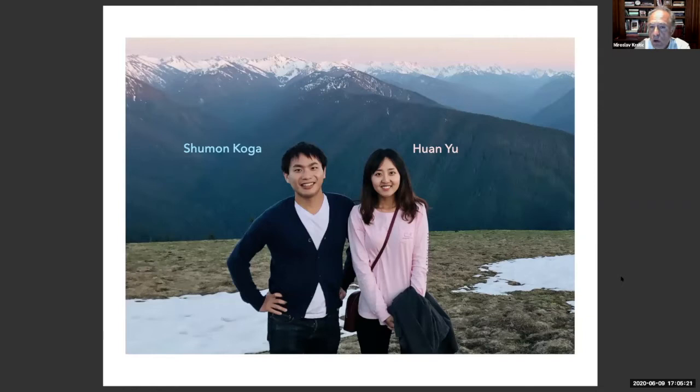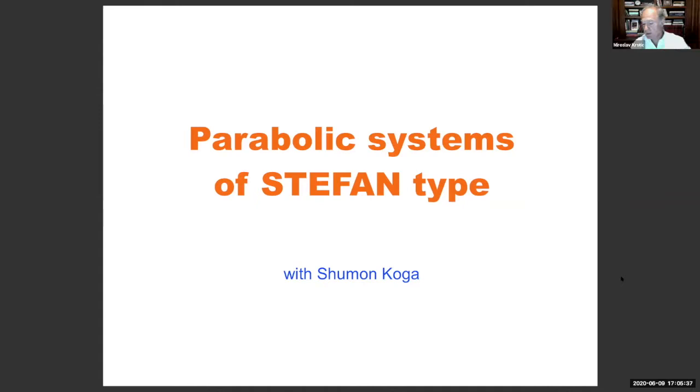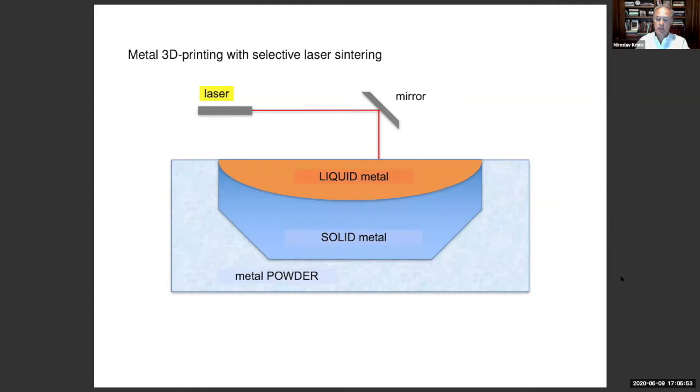These results are by Shimon Koga and Huan Yu, who both recently graduated with me and are both at UCSD as postdocs still. The topic that I will talk about first is parabolic systems of the so-called Stefan type. So essentially the heat equation with a boundary governed by a scalar ODE. That model arises in phase change problems.